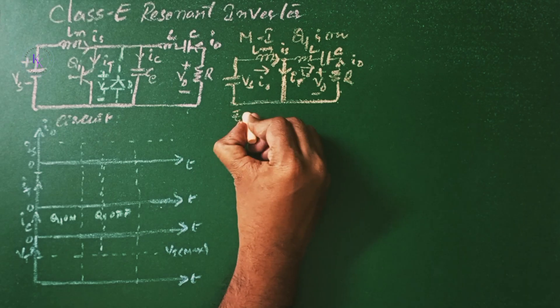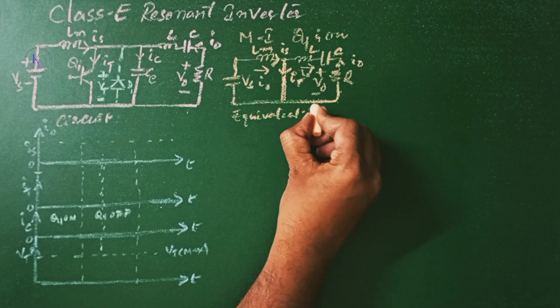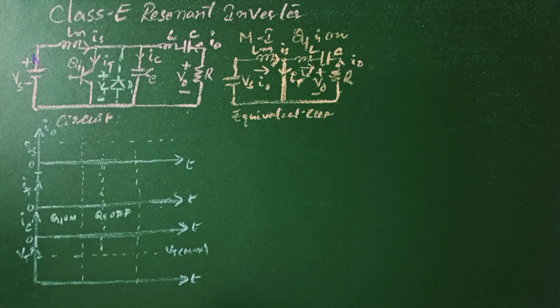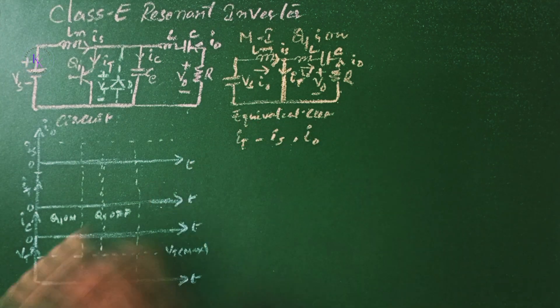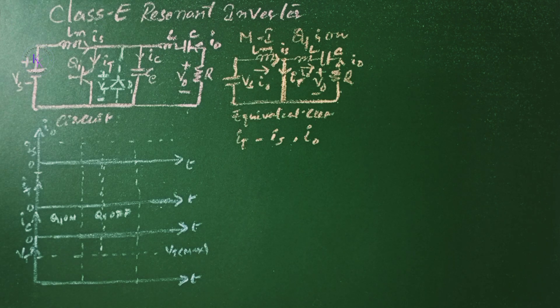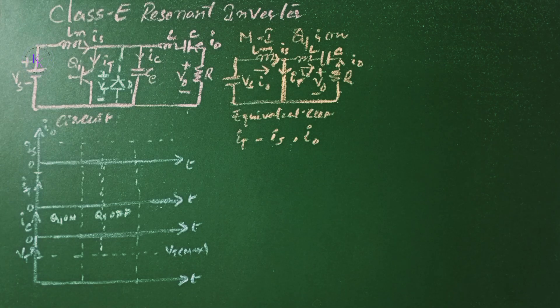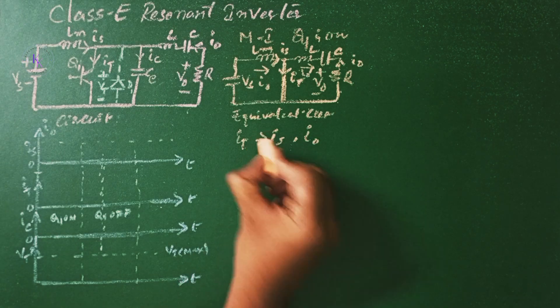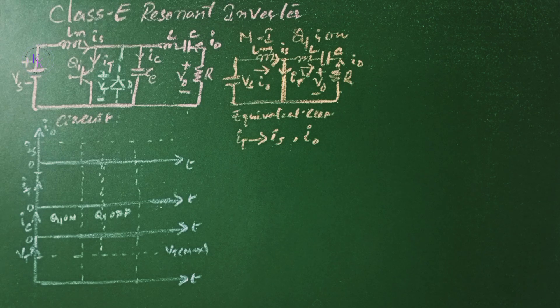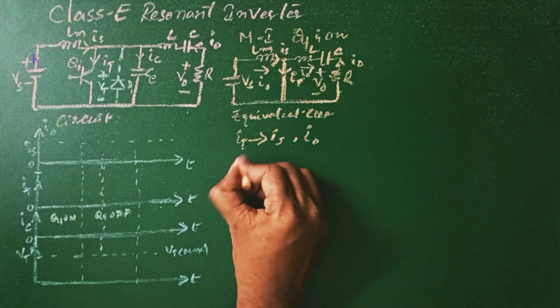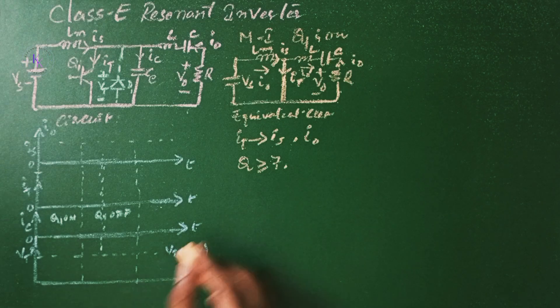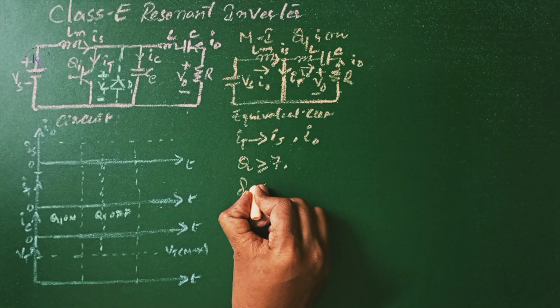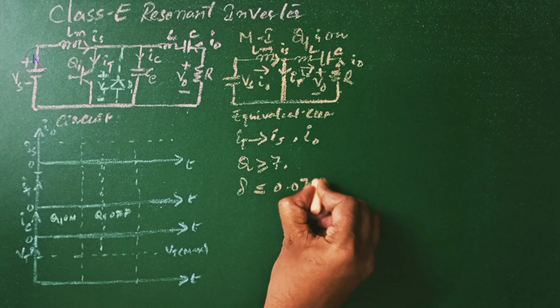This is an equivalent circuit for Mode 1. The switching current IT consists of the source current as well as output current. In order to obtain an almost sinusoidal output current, the values of inductance L and C are chosen to have high quality factor, that is Q greater than or equal to 7, and low damping ratio, that is delta less than or equal to 0.072.